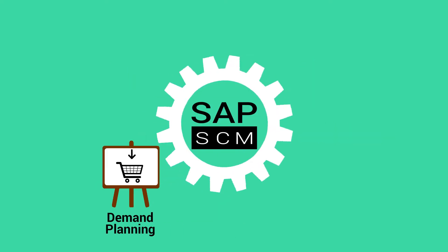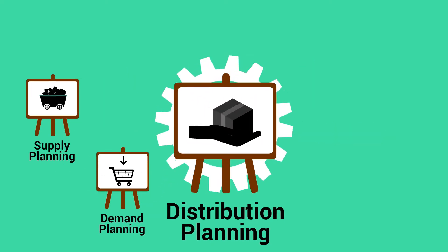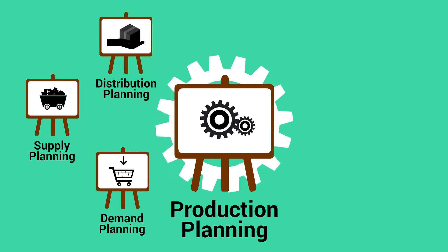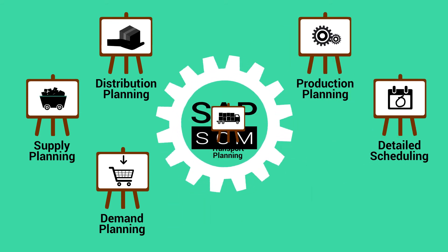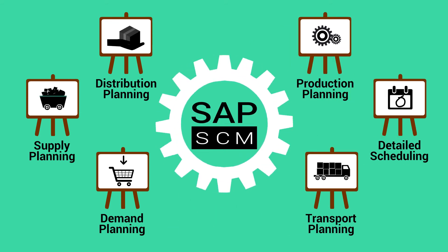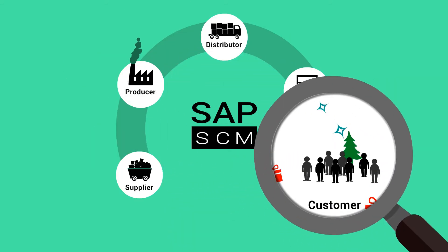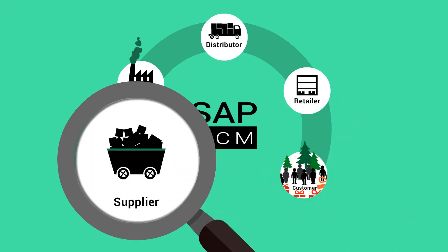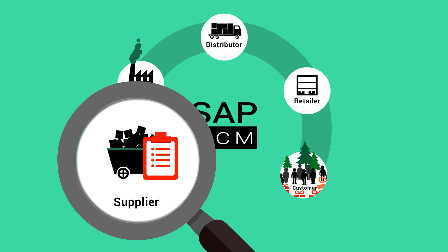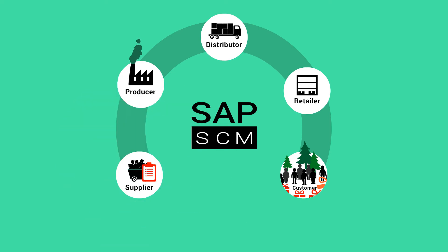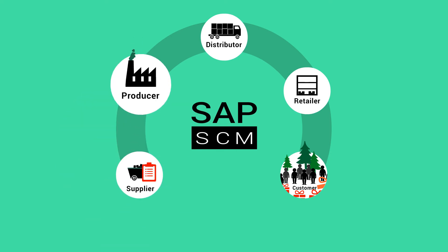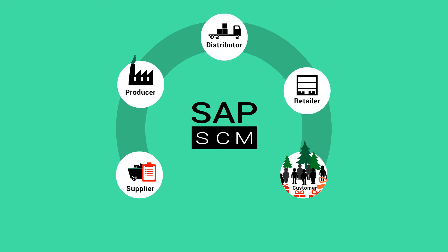SAP SCM is an advanced planning engine capable of meeting complex supply chain challenges. It can help you to accurately forecast demand, plan raw material supply, keep track of supplies and orders, and in case of contingencies — such as the raw material shortage you face — enable you to take corrective measures.